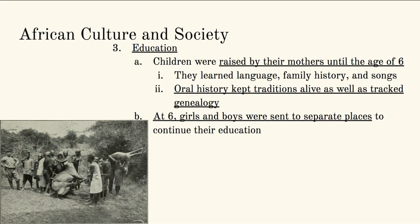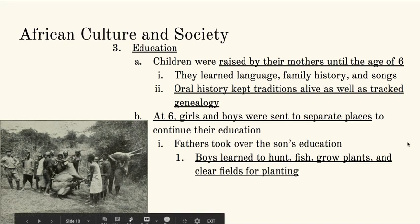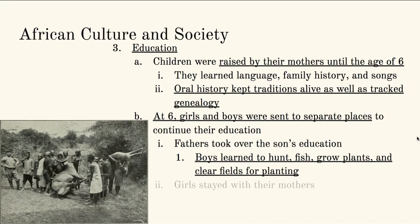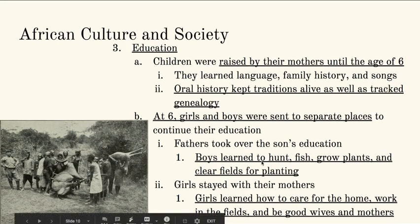Around the age of six, boys and girls get sent to different places to continue their education — not a formal school. Fathers take over the sons' education: boys learn to hunt, fish, grow plants and crops in the fields, and clear the fields for planting. Girls stay with their mothers and learn how to care for their homes, work in the fields, and learn that cultural system of being good wives and mothers. The education of everyone within African culture at this time was rooted in the family: mothers passing down oral traditions, fathers passing down how to provide for families, and girls staying with their mothers to learn how to set up their own family units and prepare for teaching their own children.